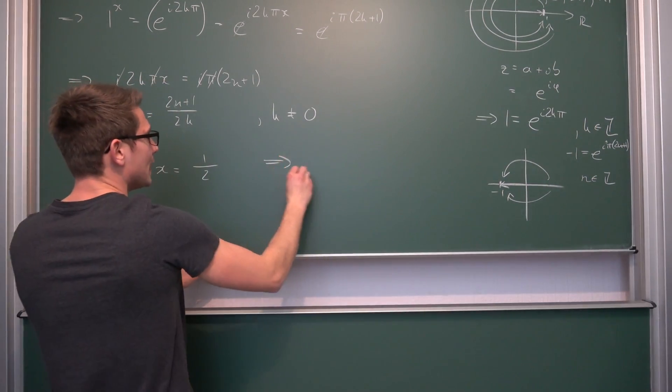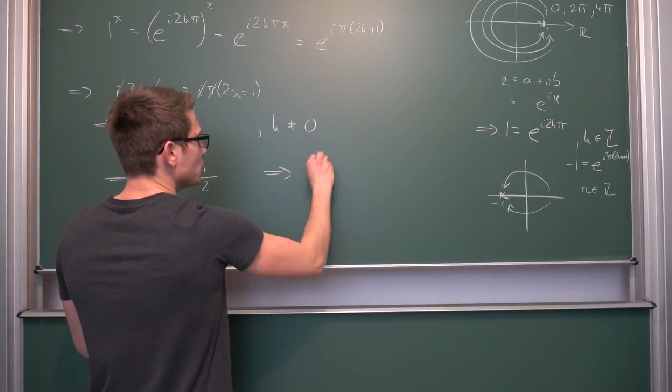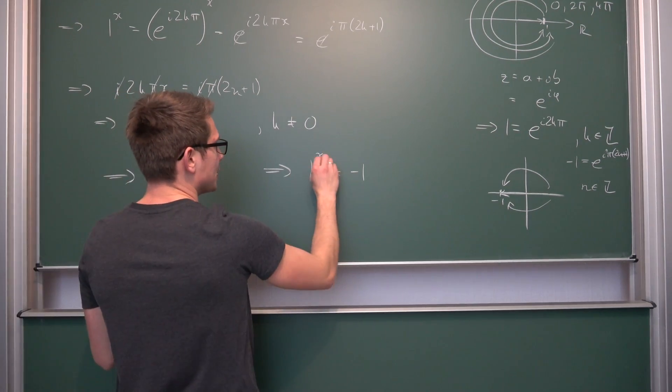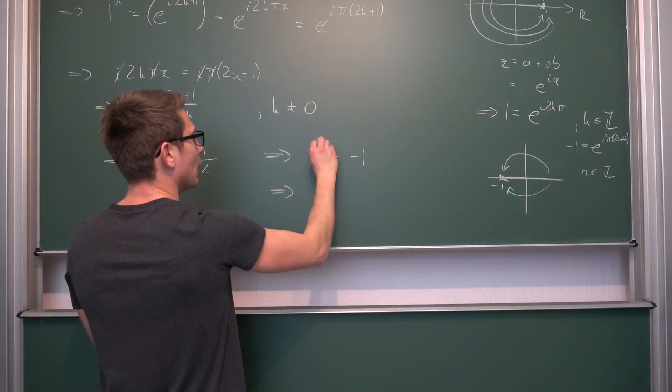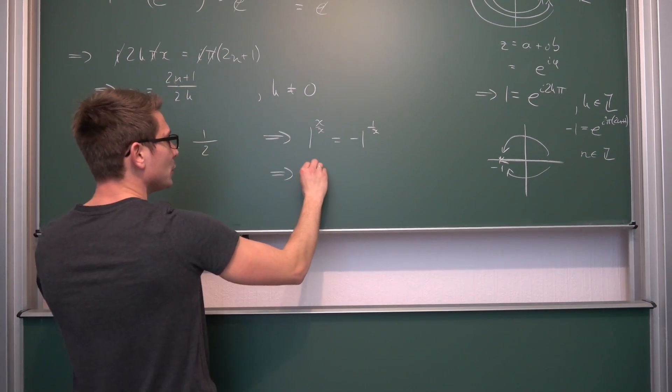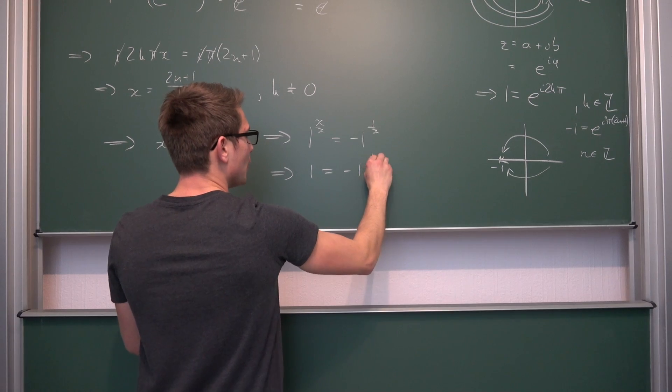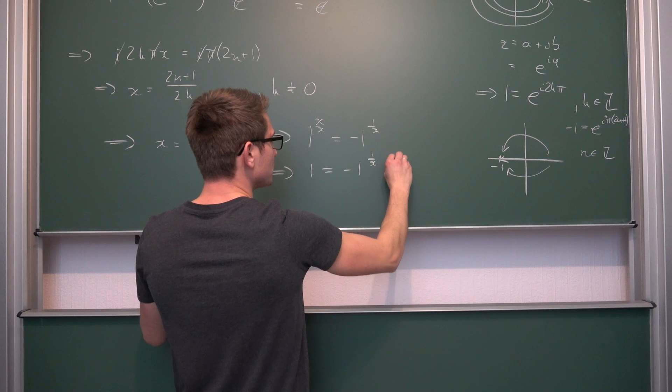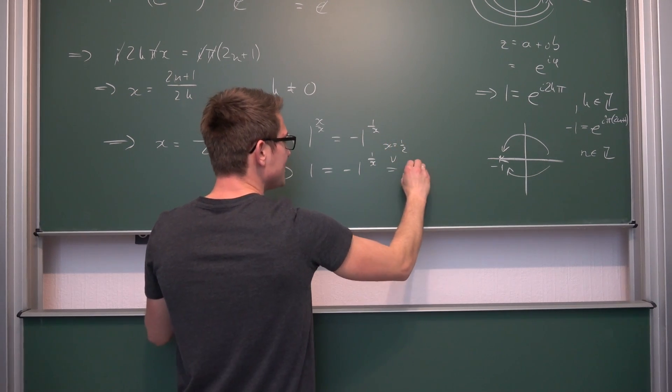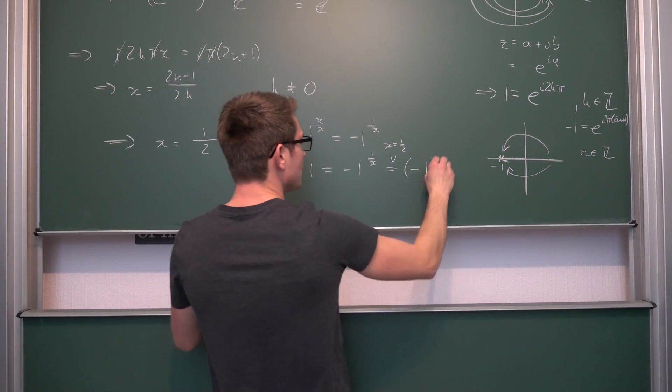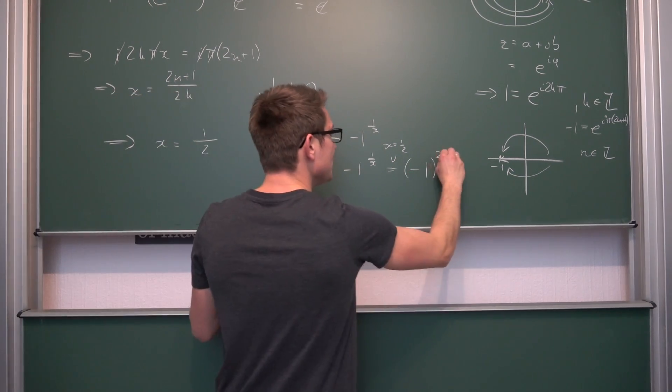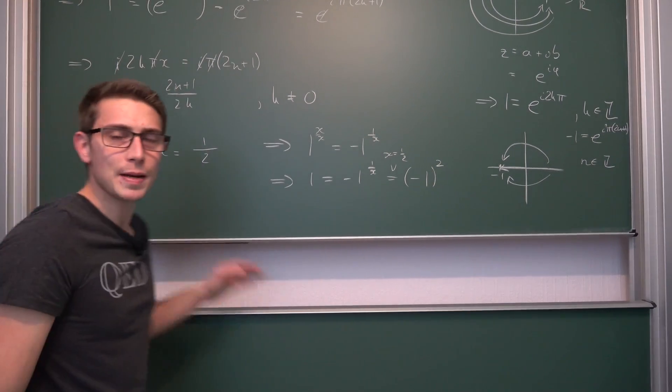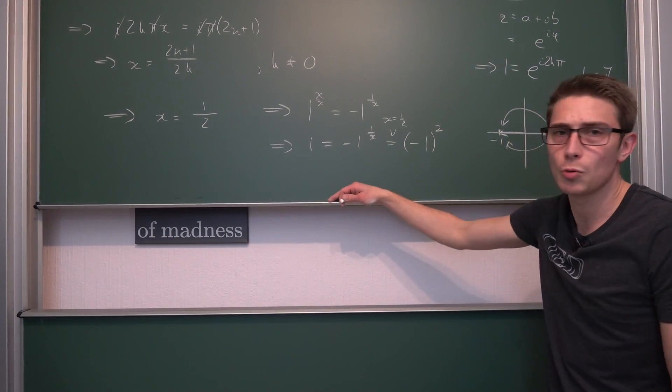Well, it does make more sense if you take a look at it like this. If we take our original equation, 1 to the x power being equal to negative 1, and take the x root on both sides, our x up here is going to cancel out. We get 1 is equal to negative 1 to the 1/x. And now, obviously, if we plug 1 half into here, x equal to 1 half, we are going to get that negative 1 to the 1 over 1 half. Obviously, negative 1 squared is going to give us 1. It does make perfect sense. And on the principal branch, this makes even more sense.